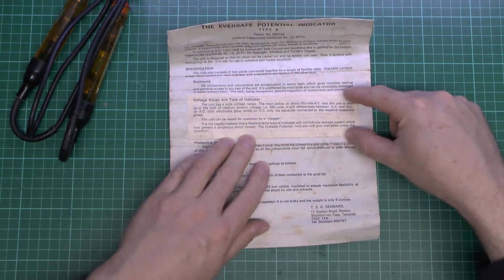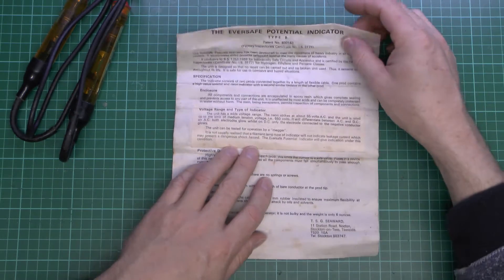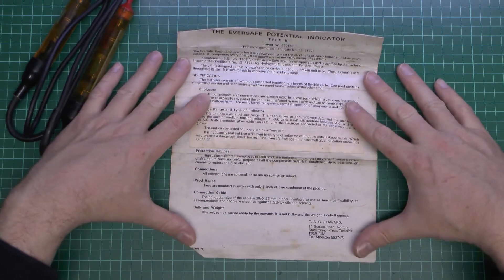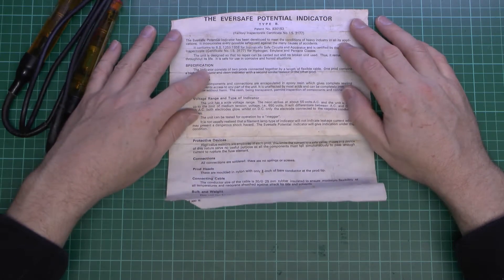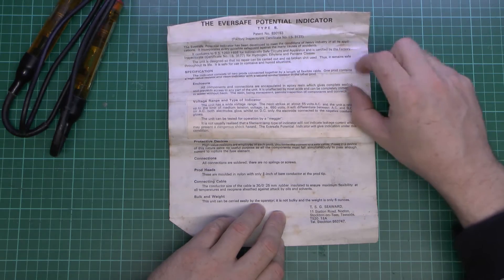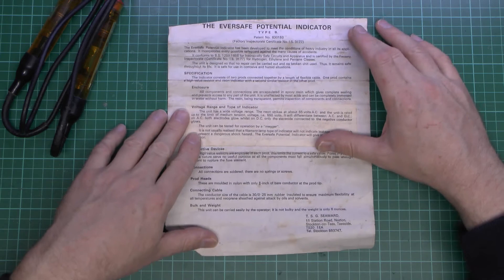It also had a label stuck over the center of it when it was actually done, because whatever they printed underneath was generally changed at some point. So there we have it, and it's called the Eversafe Potential Indicator Type B. As it says on here, I'll put a better copy of this on for download rather than this other manky example here.